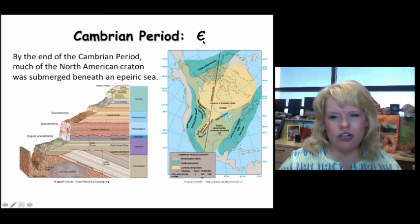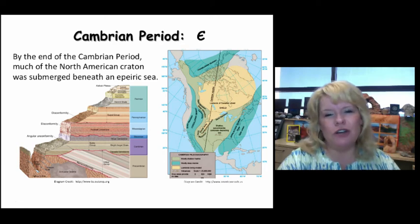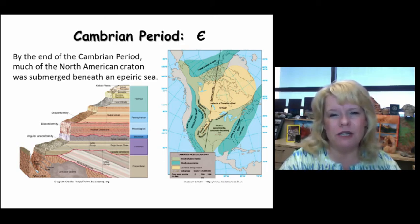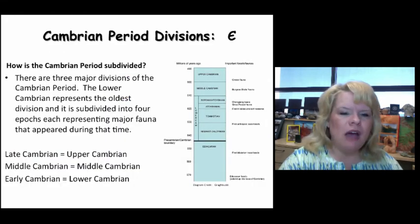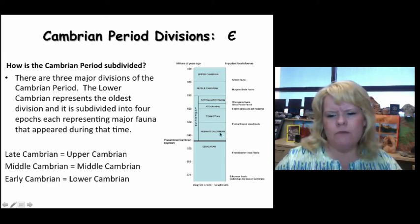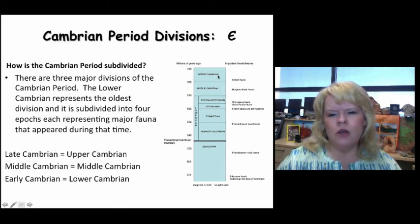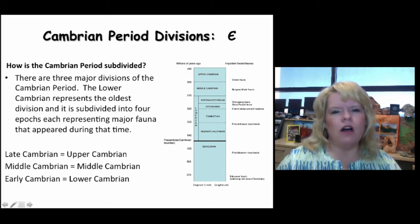By now you should know that the symbol for Cambrian is not C — C is given to the Carboniferous, the combined Mississippian and Pennsylvanian. How many subdivisions does the Cambrian have? There are four epochs making up the Lower Cambrian, because of the appearance of animals during the Cambrian explosion in the earlier Lower Cambrian. Then we get the Middle Cambrian, famous for the Burgess Shale, and then the Upper Cambrian — a shorter segment representing the remarkable end of the Cambrian where we lost most of our trilobites when the Sauk Sea began to regress off the continent.